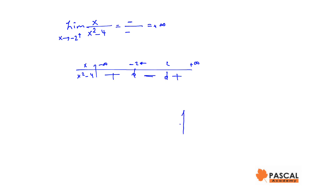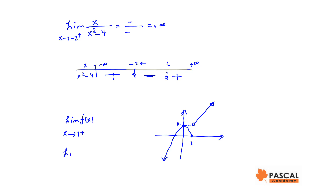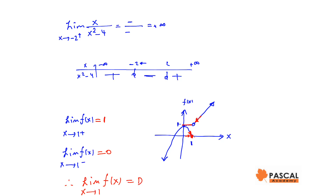Let's consider the graph of a function f of x and find the right side and left side limits of f of x as x approaches 1, and see if the limit of f of x as x approaches 1 exists or not. When x approaches 1 from the right side, f of x is getting close to 1. When x approaches 1 from the left side, f of x is getting close to 0. The right side limit and the left side limit are not the same, therefore the limit of f of x as x approaches 1 does not exist.